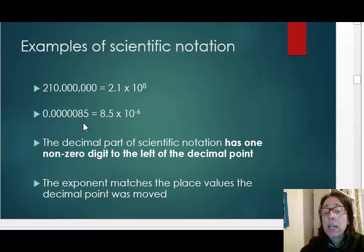Looking at 85 ten millionths, we need to move the decimal point 6 places (1, 2, 3, 4, 5, 6) to get one non-zero digit to the left of the decimal point. The exponent matches the number of place values the decimal point was moved.